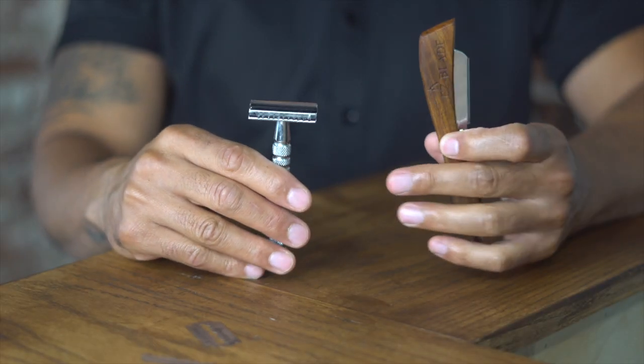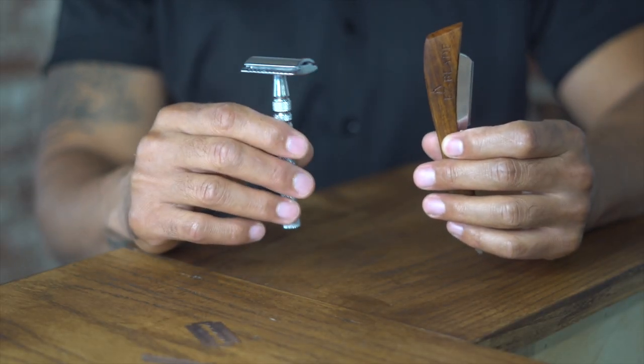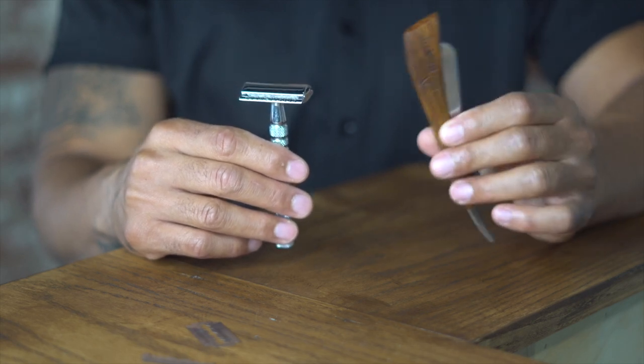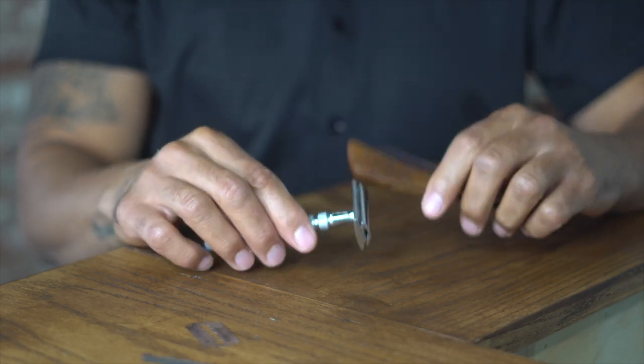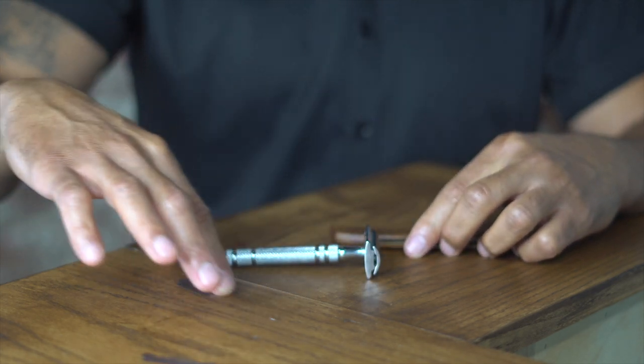Okay guys, so today we have the Easy Blade safety razor and we have the Easy Blade wood handle straight razor. The biggest difference between the safety razor and a straight razor is you're going to use a full blade for the safety razor.